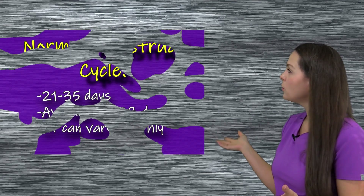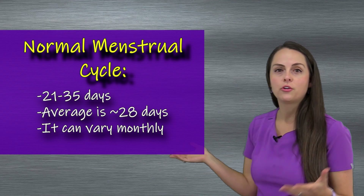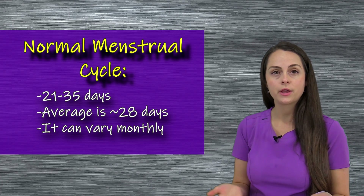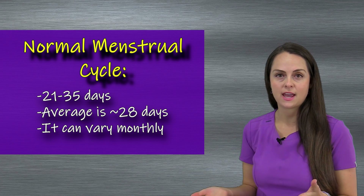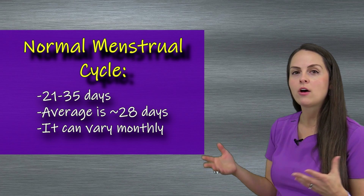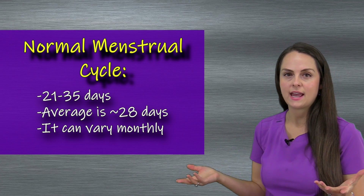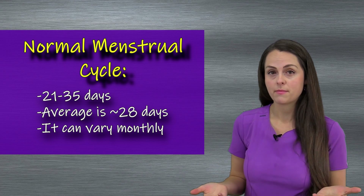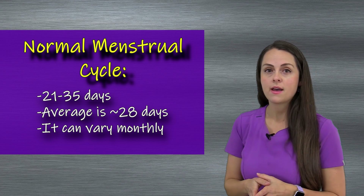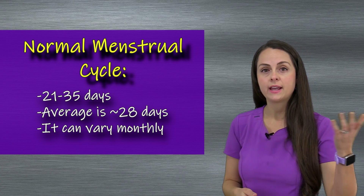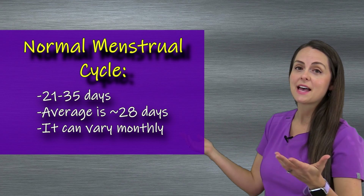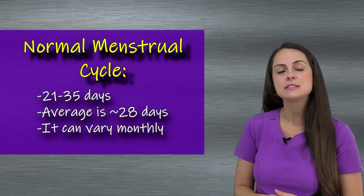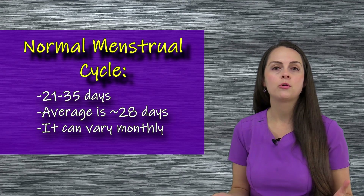Now, what should a normal menstrual cycle be? It can be anywhere between 21 to 35 days, with the average being about 28 days. It really varies and can vary from month to month — one month you may be 28 days, the next 27, and then 26 — but it's still all normal because it falls within that 21 to 35 day range.